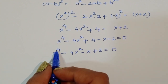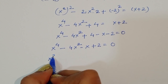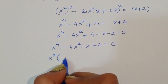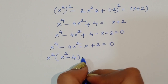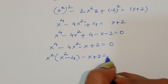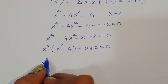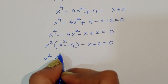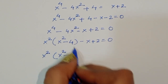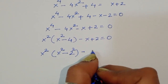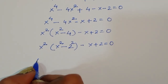Now from x⁴ - 4x² - x + 2 = 0, we take x² as a common factor from the first two terms, giving x²(x² - 4) minus (x - 2) = 0. We can write x² - 4 as x² - 2², which is a difference of squares.